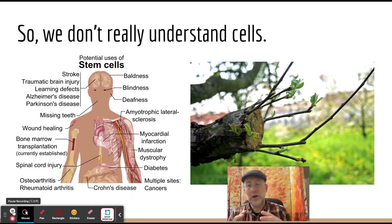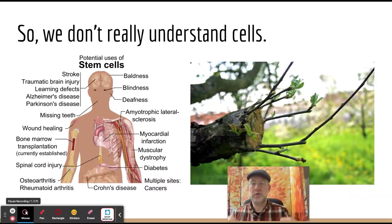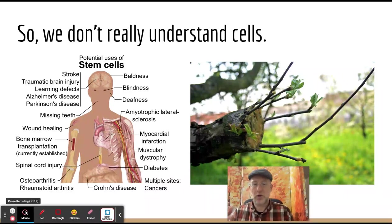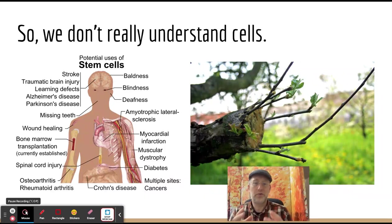We don't really understand how cells know what to do, but we're going to use stuff like stem cells — undeveloped cells. We put them all over in the human body and they can reverse all sorts of diseases because they can adapt to all these different situations. And as you get older, you still have stem cells — you have a lot when you're younger, but you still have them when you're older. So this is really good for medicine.